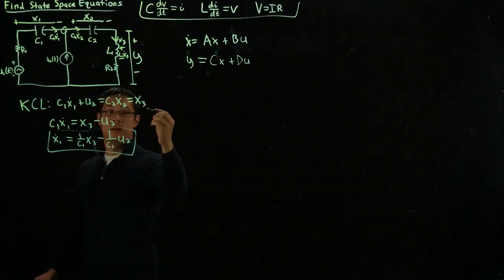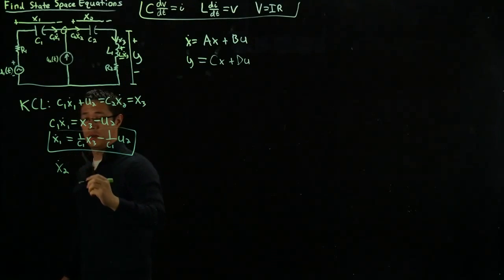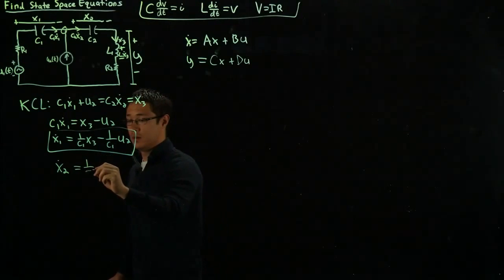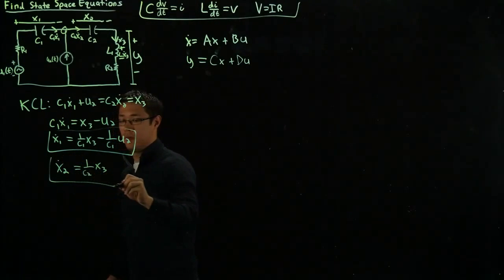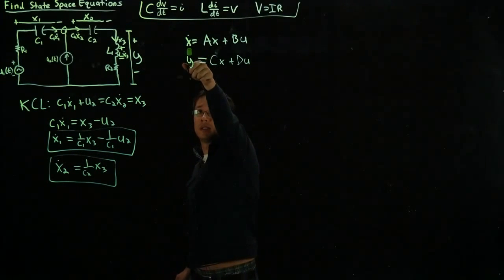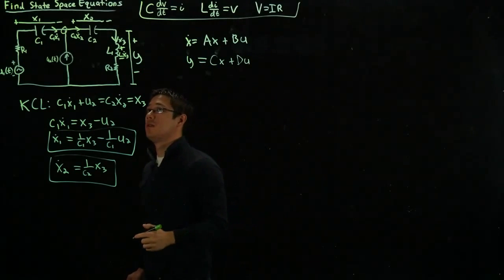Secondly, we can immediately write x2 dot equals 1 over C2 times x3. So from this, for our x dot equation, we only need to find x3 dot now. Now, how can we do that in this big circuit?